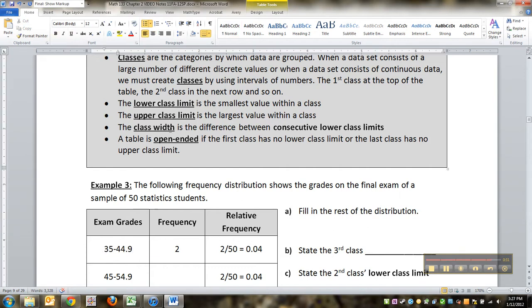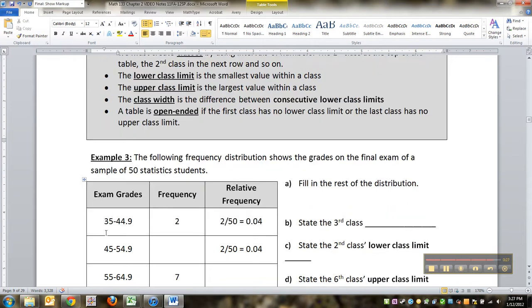And then the class width is the difference between consecutive lower class limits. Catch that? It's not the difference between these two numbers. It's the difference between this number and this number, right, between the 35 and the 45. That's what makes your class width. Because this number really goes on forever, you can't really use it. Well, actually, you are using it - 44.9 forever is essentially 45, and so that's the number you use, 45.